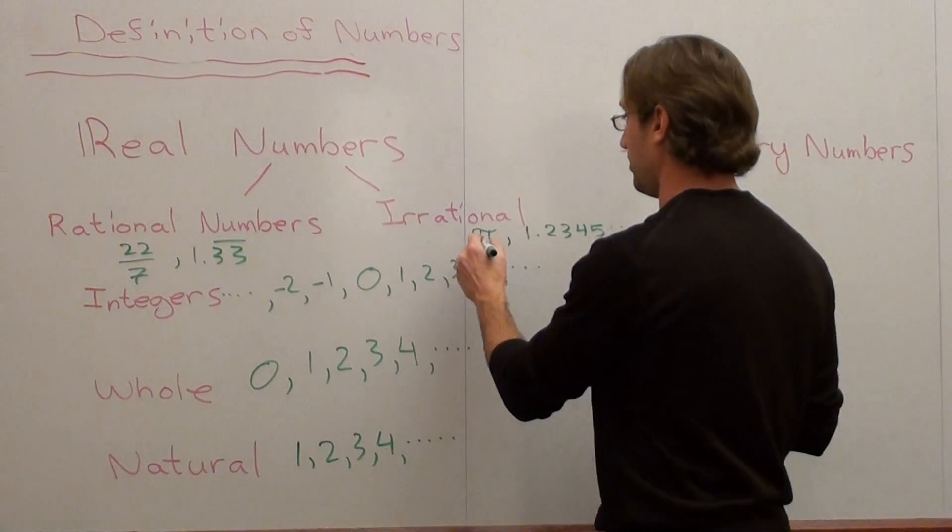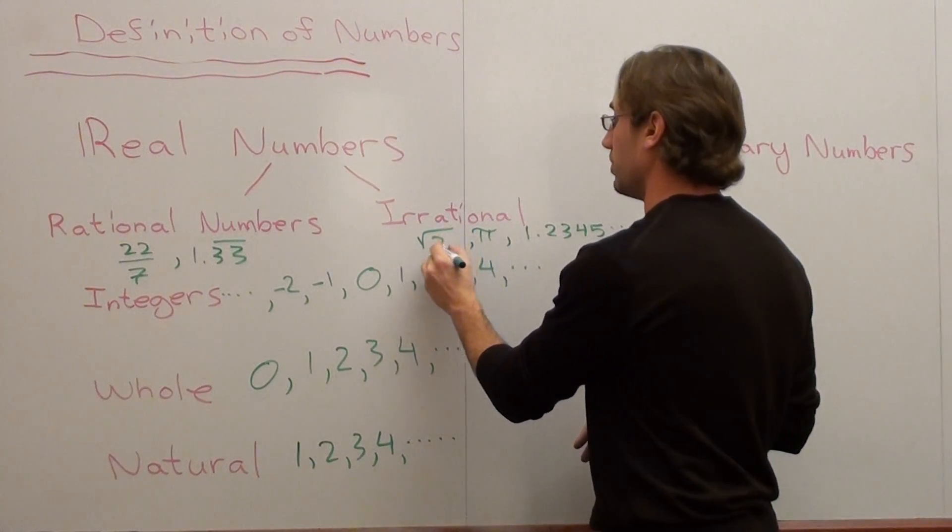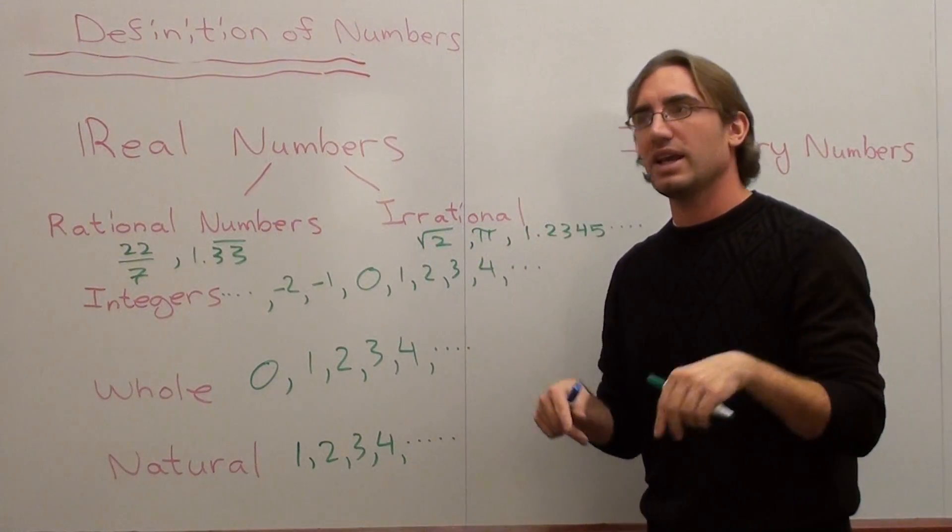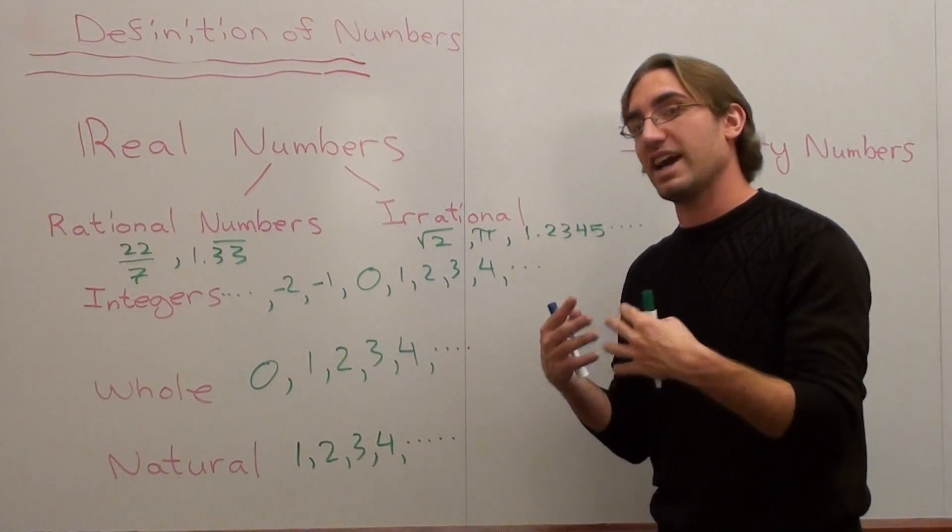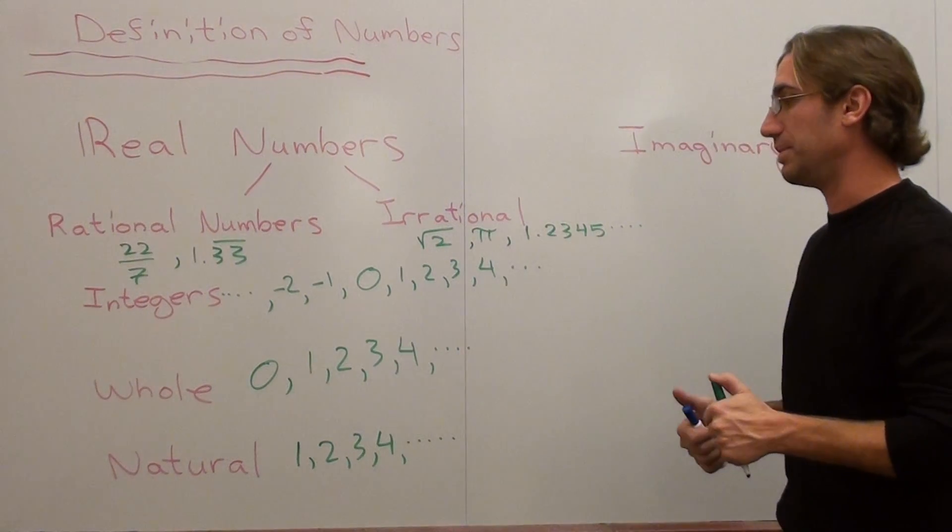Another example of an irrational number is the square root of 2. You can't split it. There's no number times itself exactly that equals that. So that's an example of an irrational number.